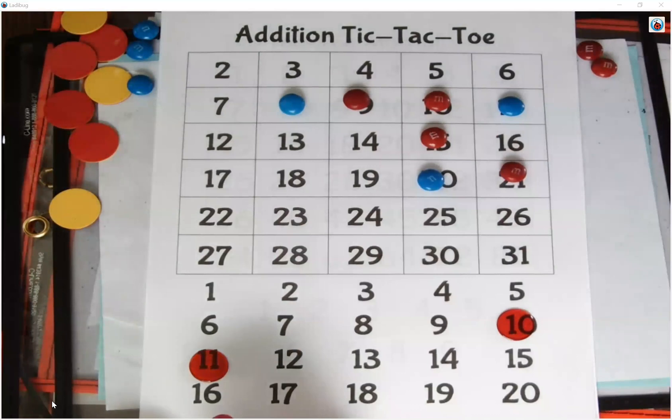Once your kids get good, make them get four in a row, five in a row, try for a whole column, try for a whole row, or make it you have to get the diagonal. It's up to you, but have fun playing. We'd love to hear your comments or see you and your friends playing this game at home. Have fun!